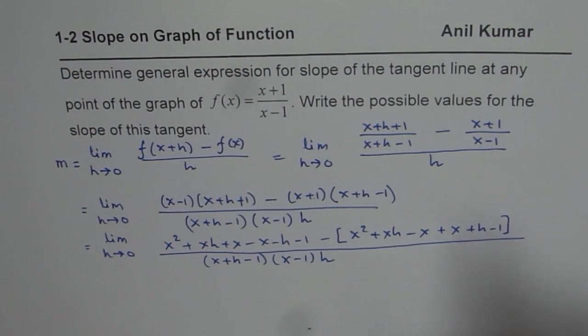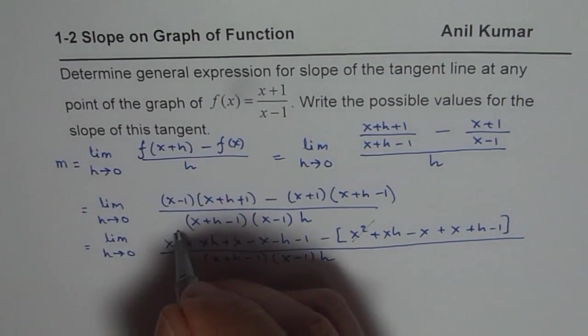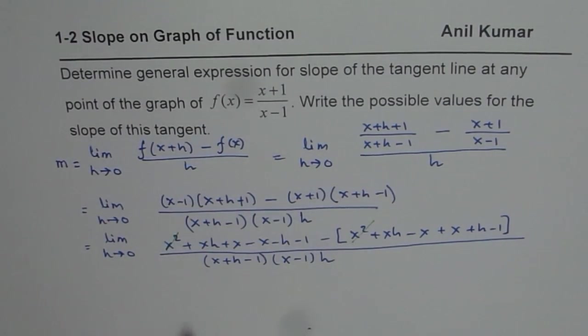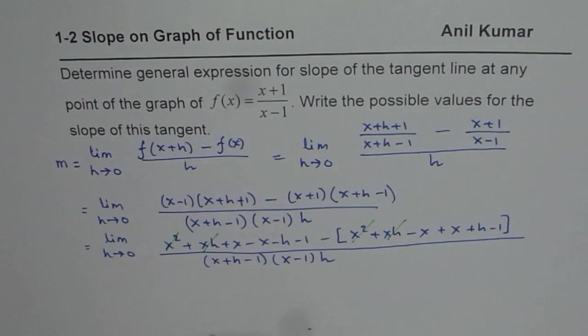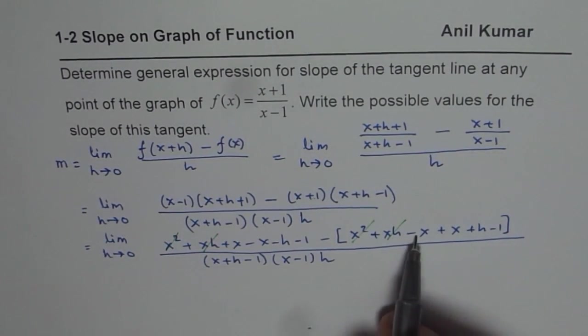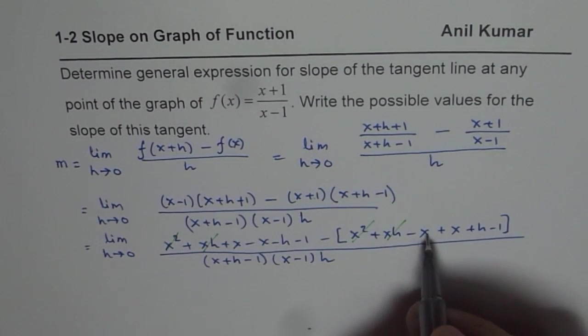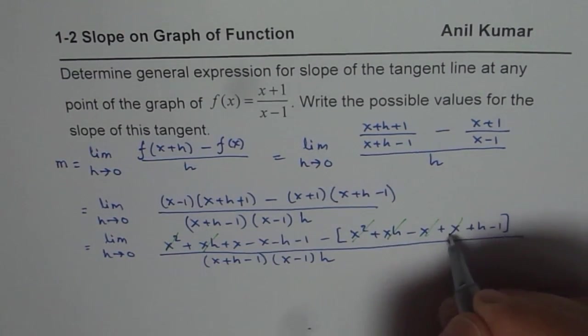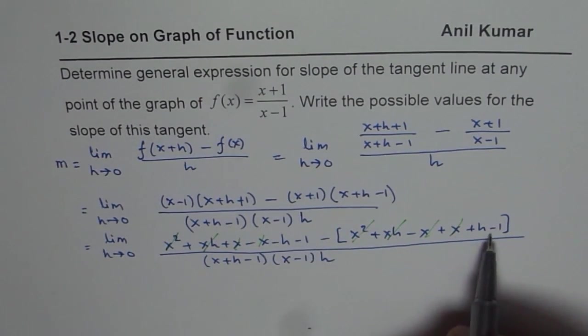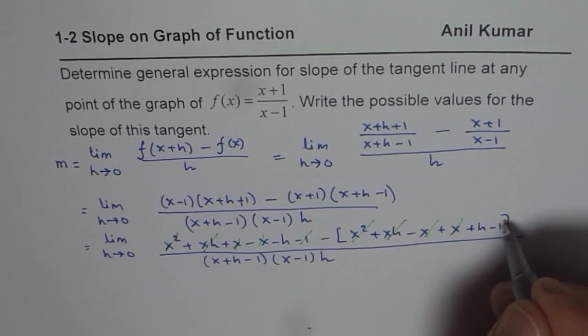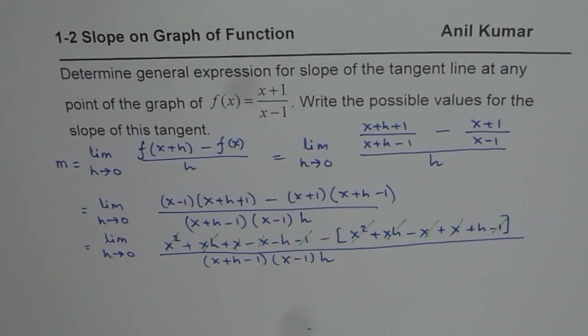Everything is divided by (x+h-1)(x-1)h. Now, let's look into the numerator and cancel out the terms. x² minus x² will be 0. xh and xh will also cancel out. Minus x plus x is 0, so these two are 0. We have minus h and that will add up. Minus 1 minus of minus 1, so they also cancel out.